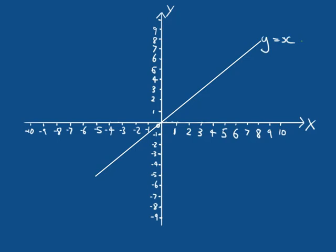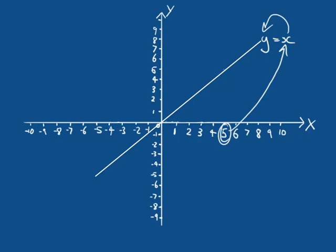If I want to translate this line vertically, what I need to do is for a given X coordinate, manipulate the Y coordinate that we're getting out when we put that X coordinate in. Because we're translating vertically, I'm either going to be adding something to that Y coordinate or subtracting something from it. Let's say I wish to move this line up by one unit. Currently, if I put 5 in as that X, we work out Y equals 5, giving us the point (5, 5).